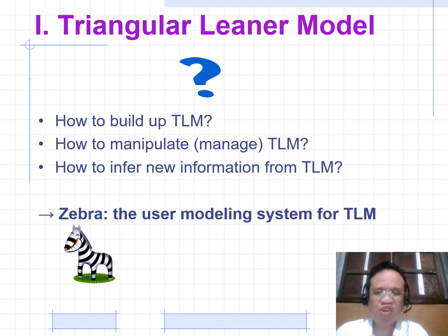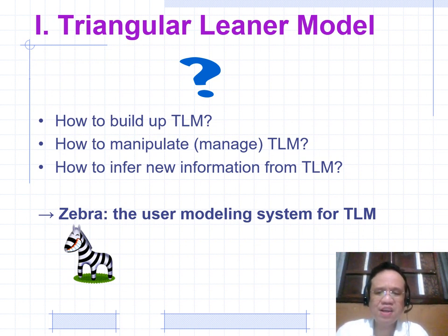Why use the Triangular Learner Model? How to build up TLM? How to manipulate and manage TLM? How to infer new information from TLM?